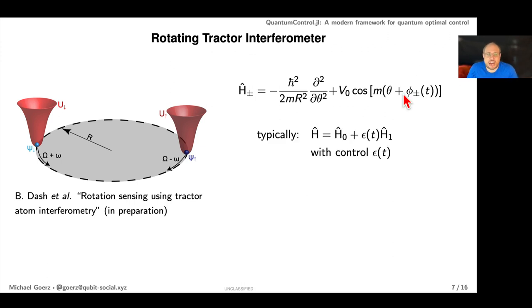That's actually quite different from what you would have normally. Normally you have Hamiltonians where you have a drift Hamiltonian and then a control Hamiltonian with some control epsilon of t in front of it. That structure is usually pretty hard-coded in your optimal control framework. Here we have something where the control isn't just a prefactor but it's actually a parameter inside of this potential operator.